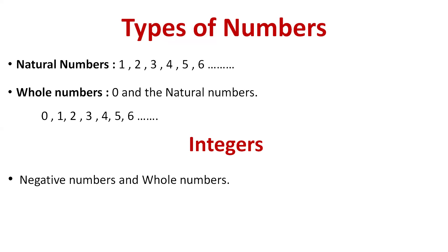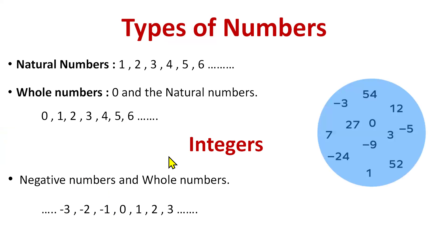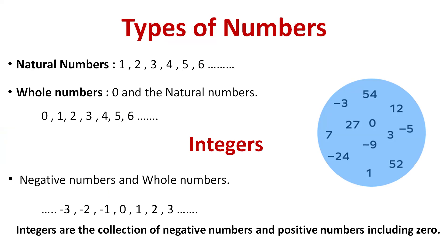When we add negative numbers to the whole numbers, we get the integers. So 0, 1, 2, 3 are whole numbers — we include the negative numbers and we get the integers. Integers are the collection of negative numbers, positive numbers, and zero. It's like a bag that has positive numbers, negative numbers, and zero.